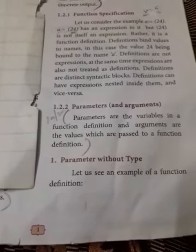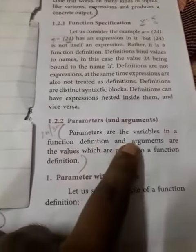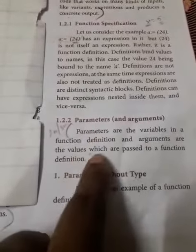What is called as parameter? Parameters are the variables in a function definition and arguments are the values which are passed to a function definition.